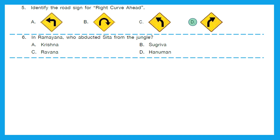Question 6: In Ramayana, who abducted Sita from the jungle? Abducted means taking someone forcefully. Do you know who abducted Sita from the jungle? It is Ravana. Option C.